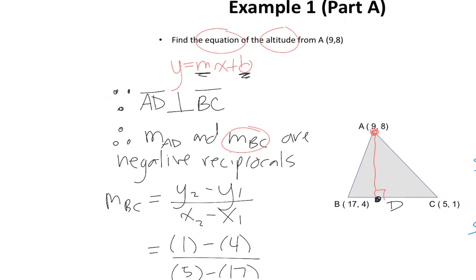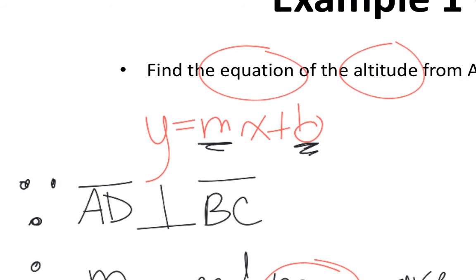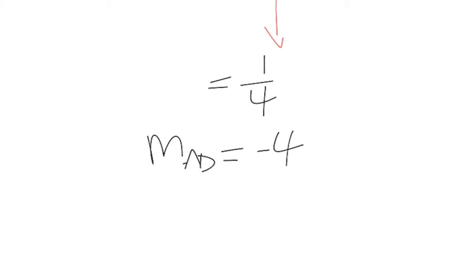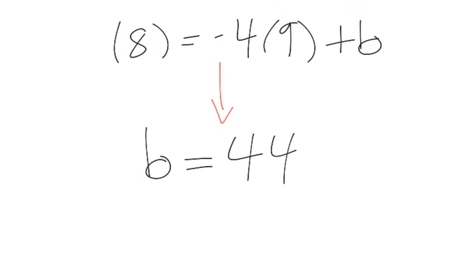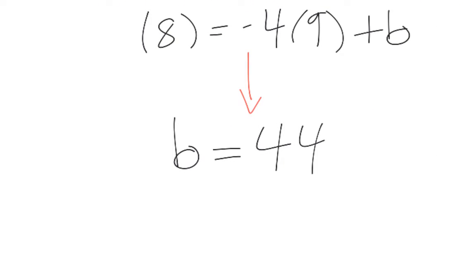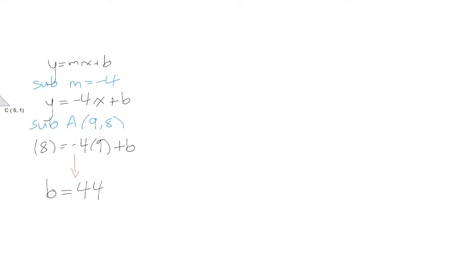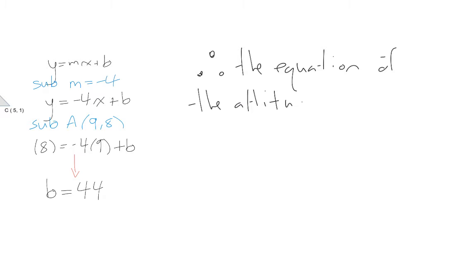We have everything we need now. Our strategy was to figure out both the value of m and the value of b — the slope and the y-intercept. We already figured out the slope, which is negative 4, and we just figured out the y-intercept, which is 44. Therefore, the equation of the altitude is y equals negative 4x plus 44.